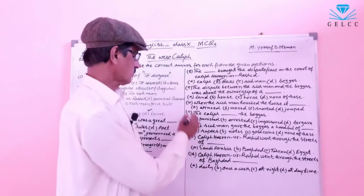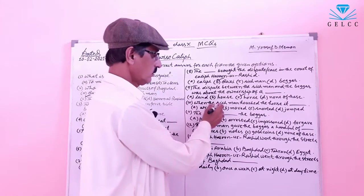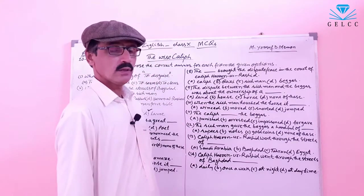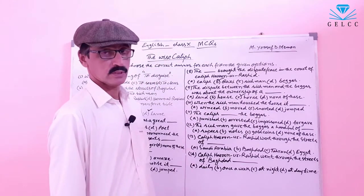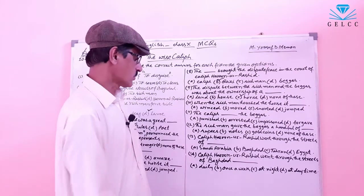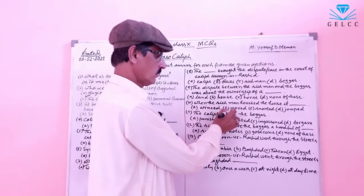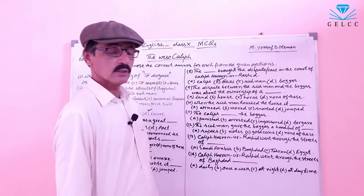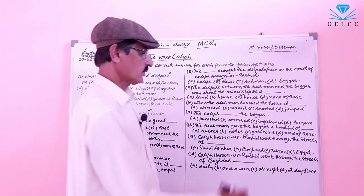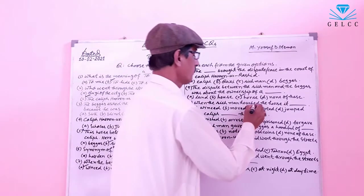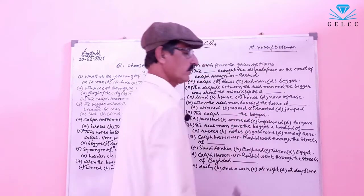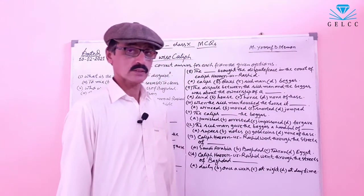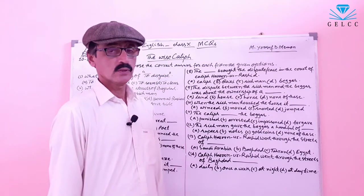Number 10: When the rich man touched the horse, it what? Options: A: Winced. B: Moved. C: Snorted. D: Jumped. The correct answer is option C — snorted. When the rich man touched the horse, the horse snorted. But when the beggar touched the horse, it winced.